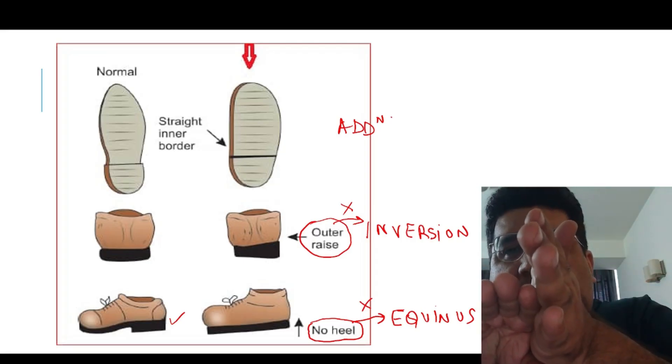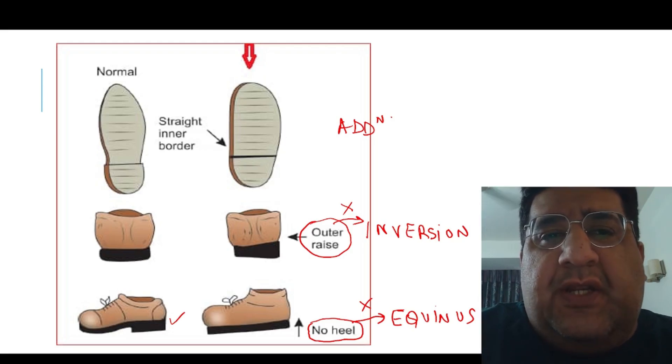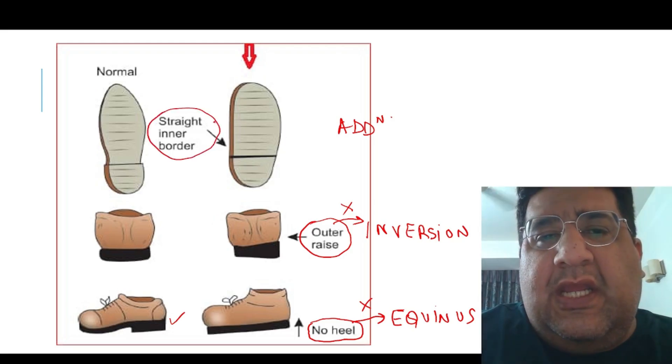We should have a completely straight inner border because if you have a straight inner border, then there are no chances of adduction. This straight inner border will help you prevent adduction.